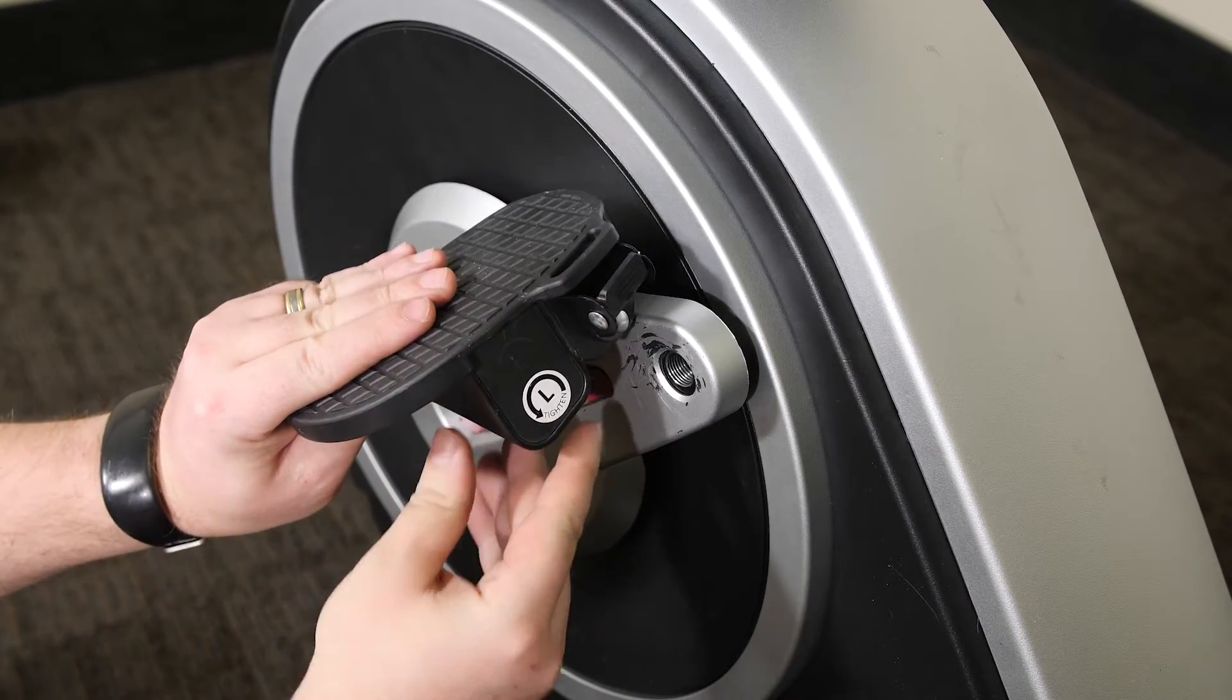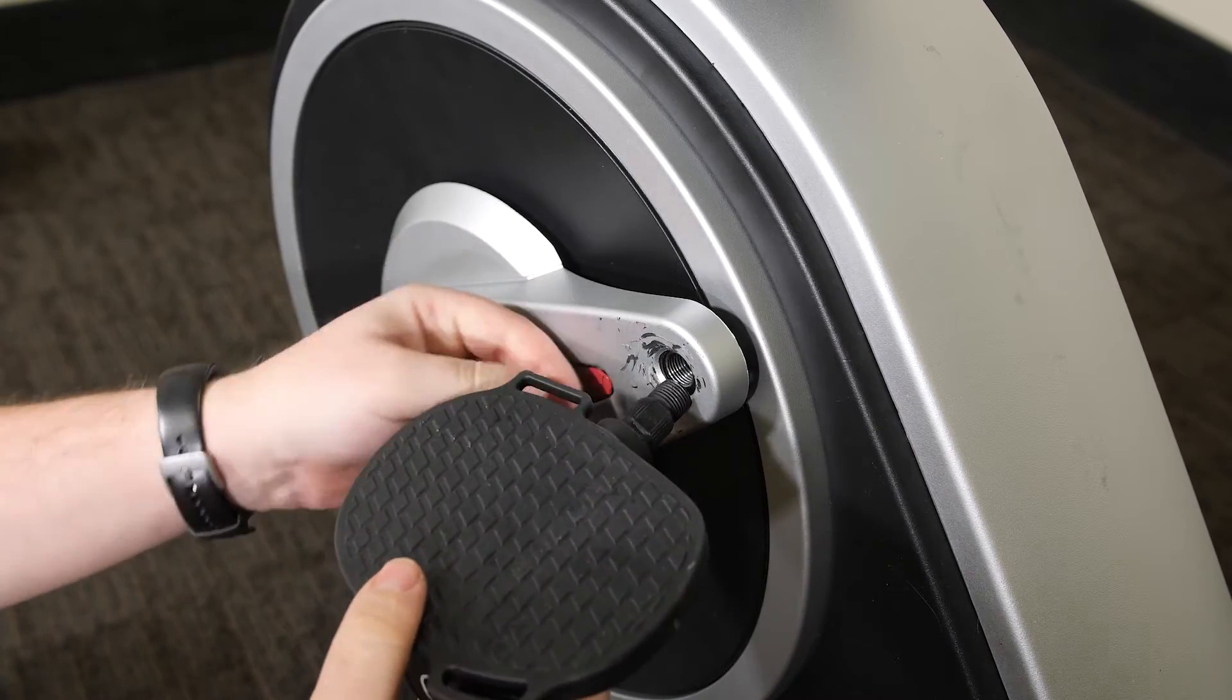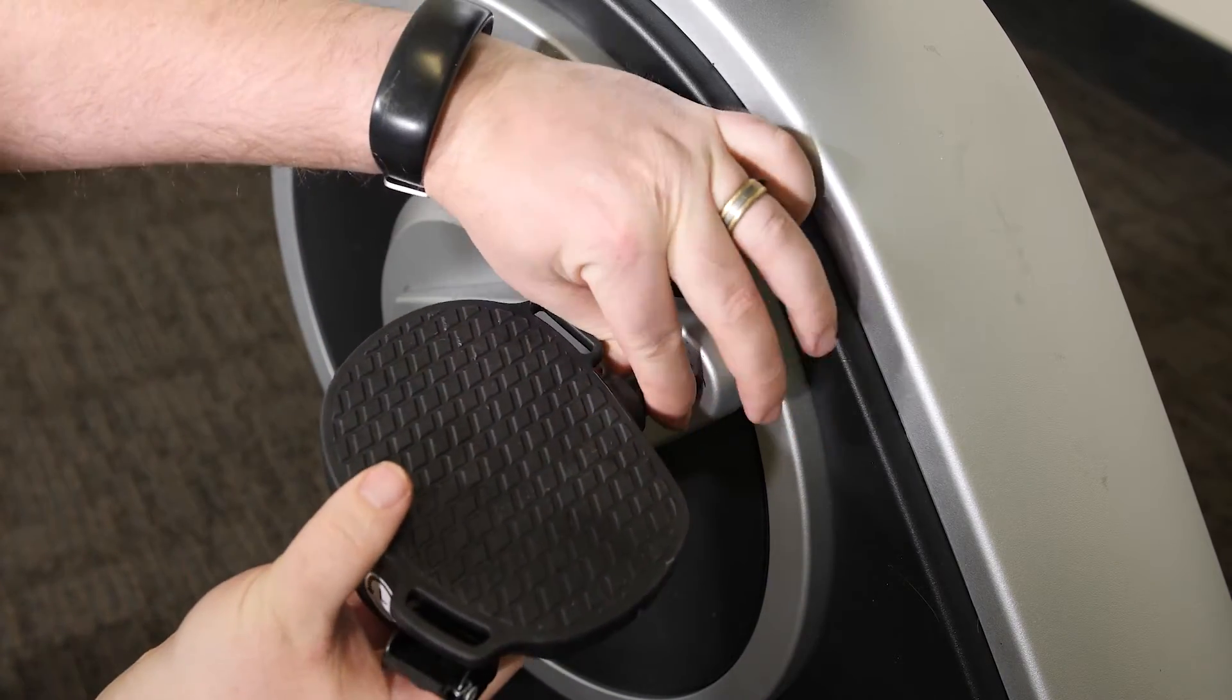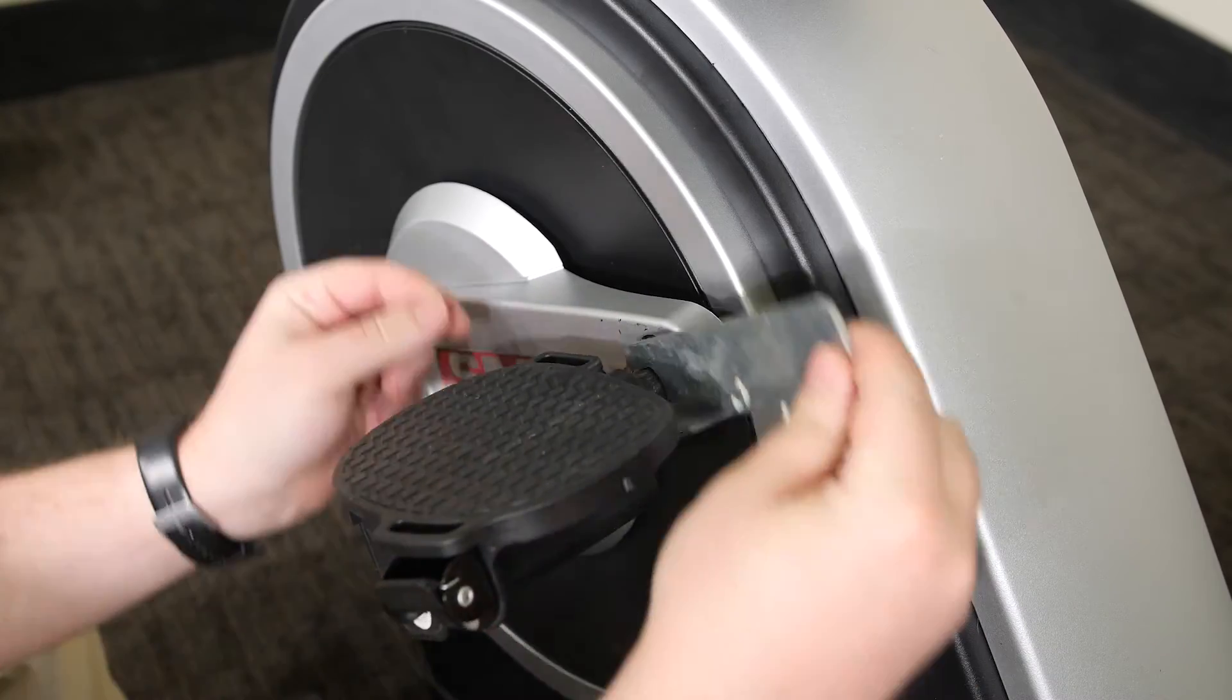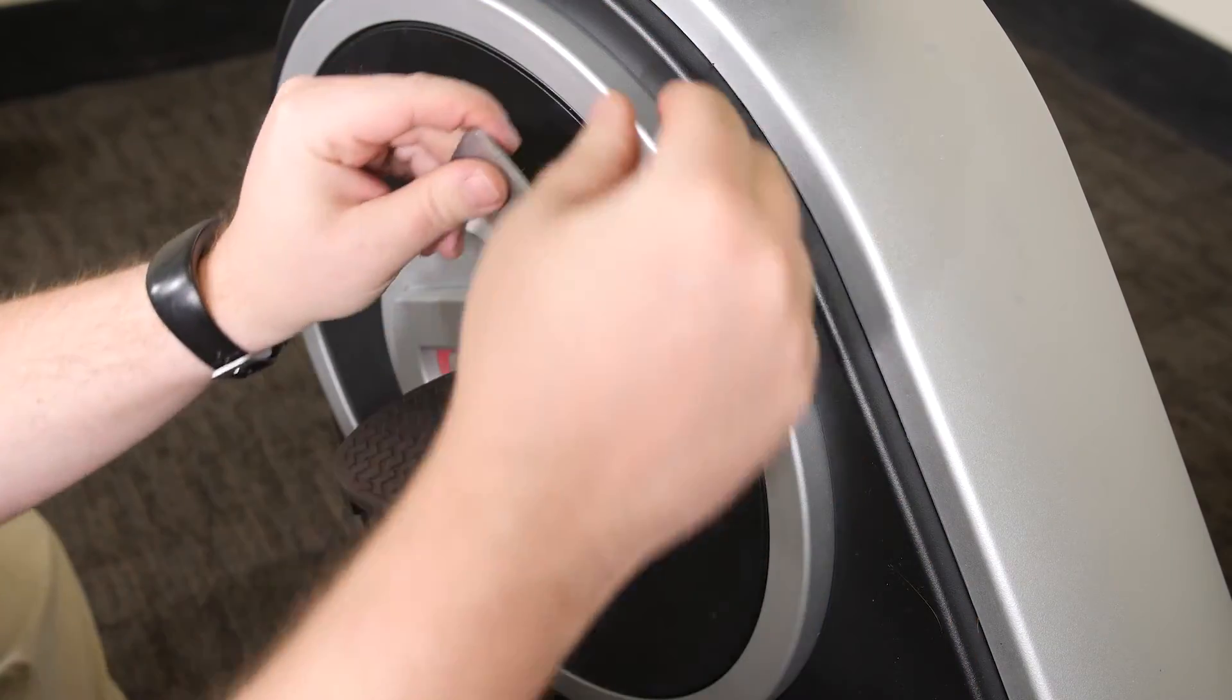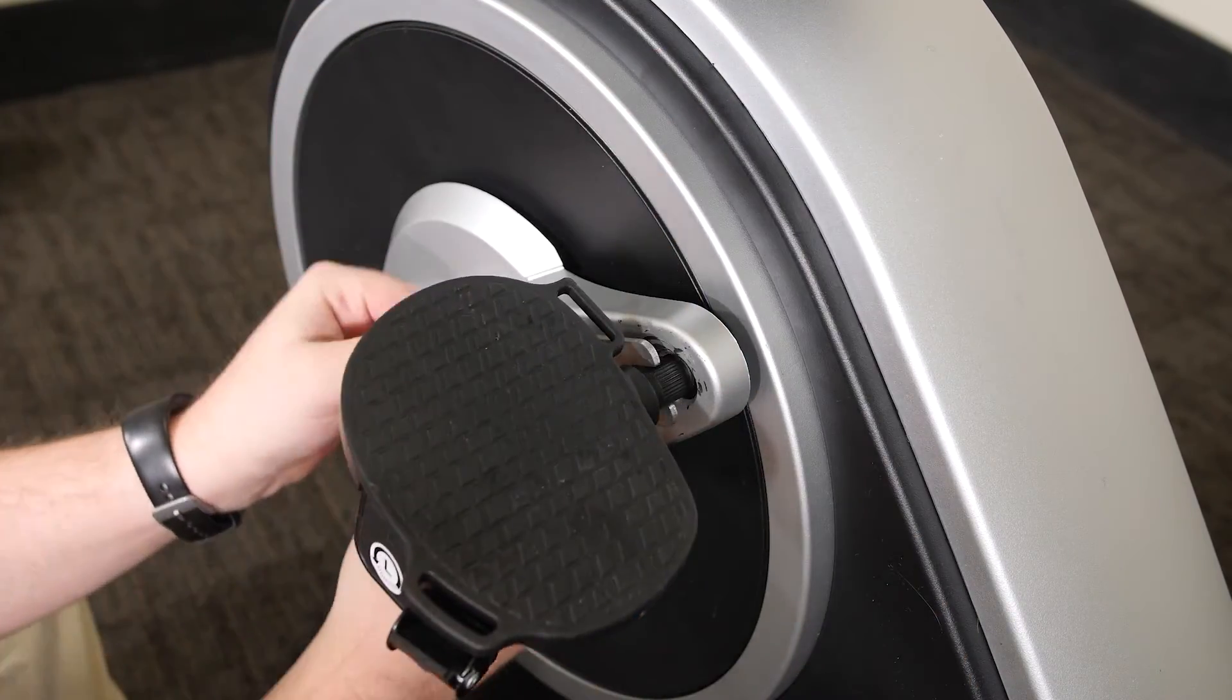After the equipment is reassembled, inspect it to make sure that it is assembled correctly and that it functions properly. Make sure that all parts are properly tightened before you use the machine.